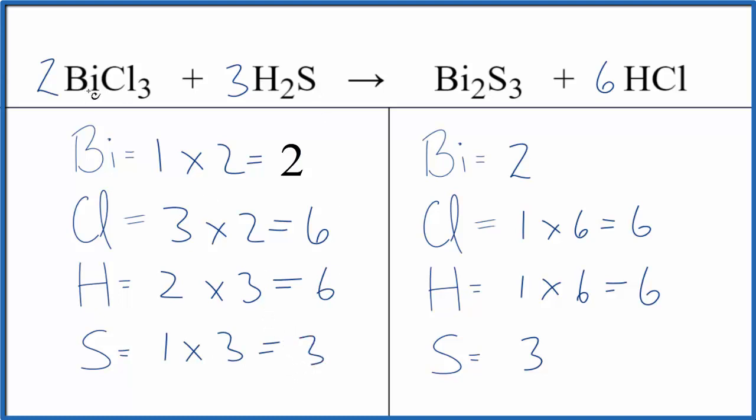This is the balanced equation for BiCl3 plus H2S. If we wanted to look at the type of reaction, it looks like the hydrogen and the bismuth, they change places. So instead of BiCl, we get Bi2S3.